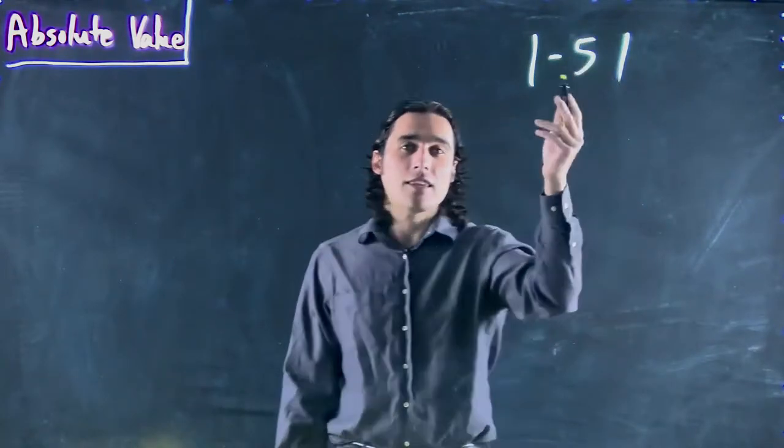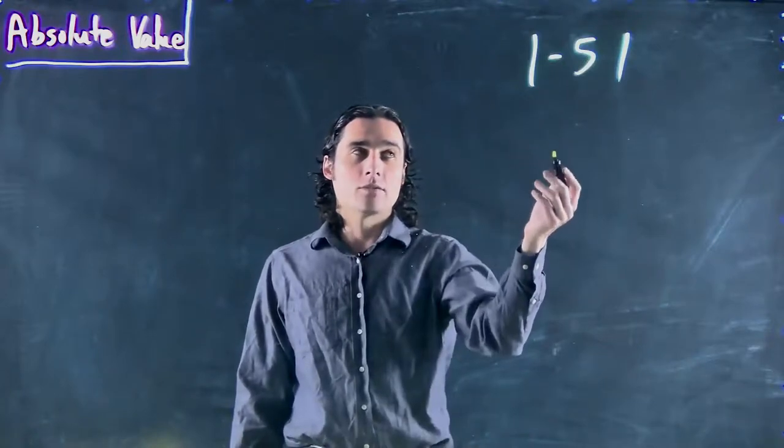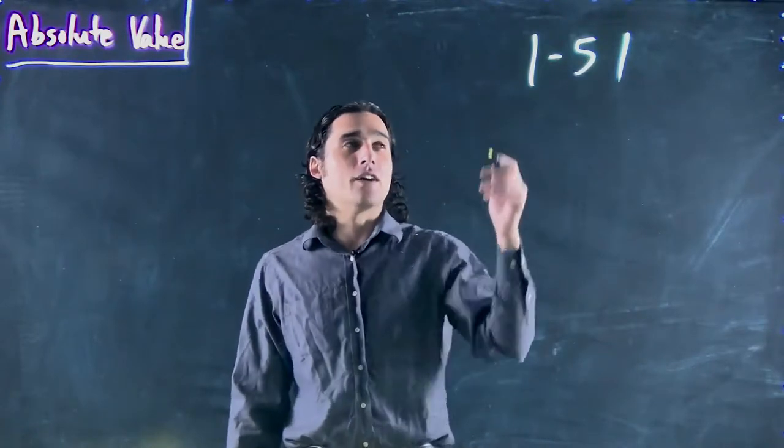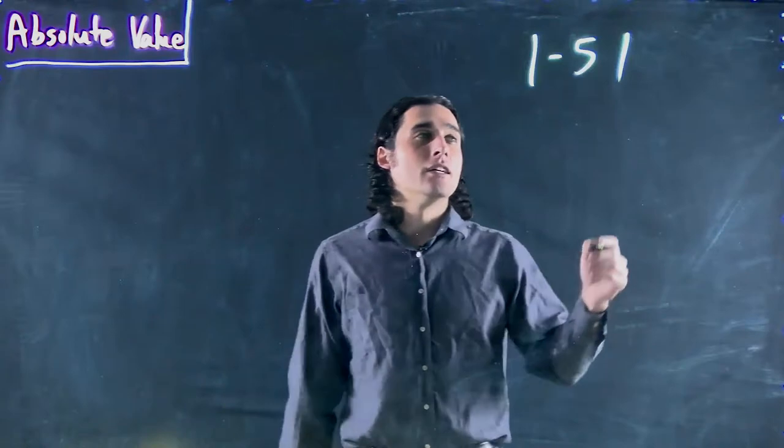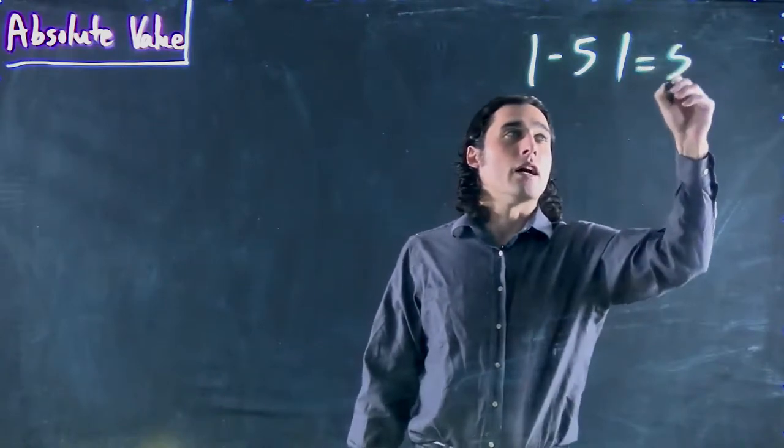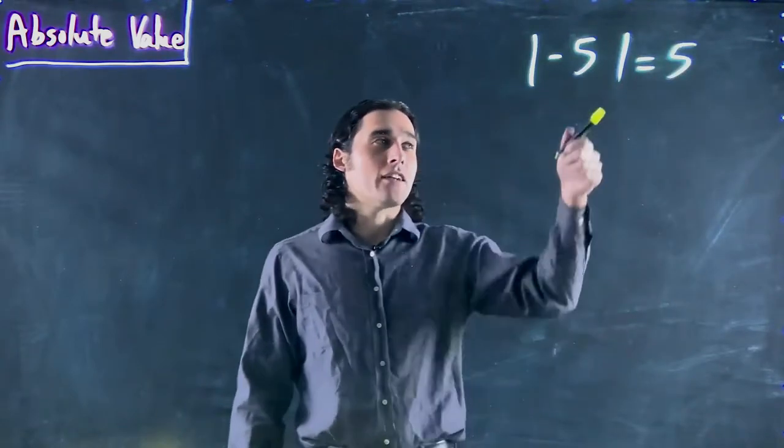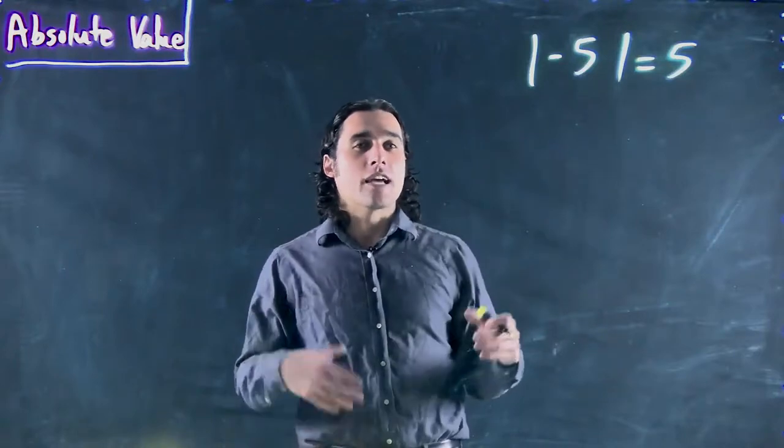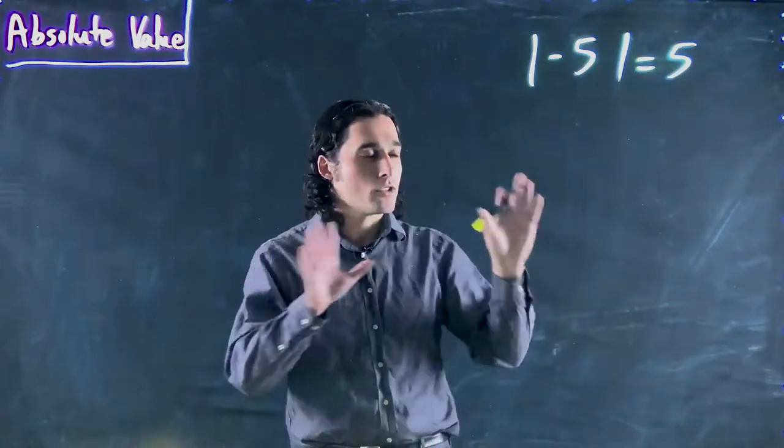the main idea is that whatever is in there becomes positive. So if I have this example, minus 5 within absolute value bars, it just is equal to 5. And when I said later we'd look at ones with equal signs, that's when you have an equal sign from the beginning. You'll see what I mean later.